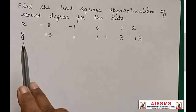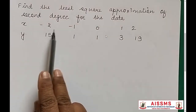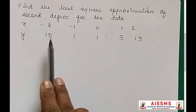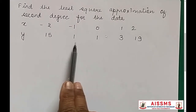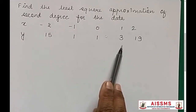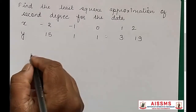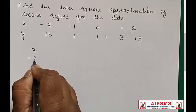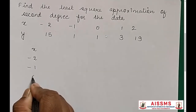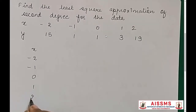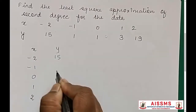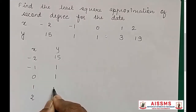You have the data points as x is equal to minus 2, minus 1, 0, 1 and 2. Y values as 15, 1, 1, 3 and 19. So we will write the values of x: minus 2, minus 1, 0, 1 and 2. Values of y as 15, 1, 1, 3 and 19.